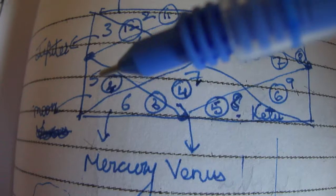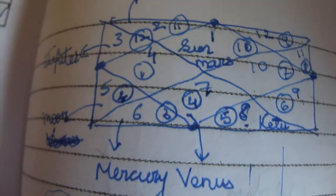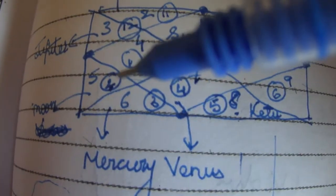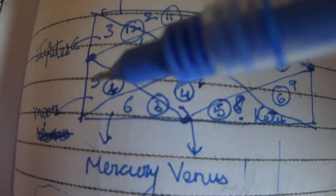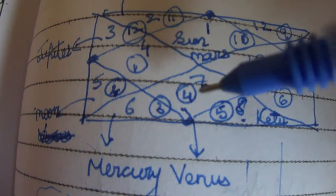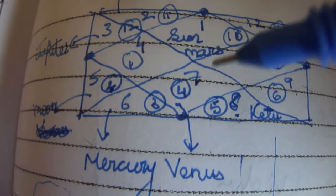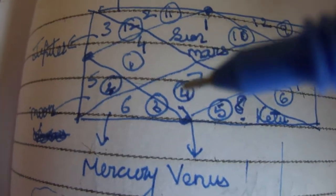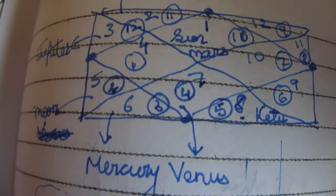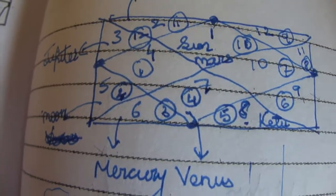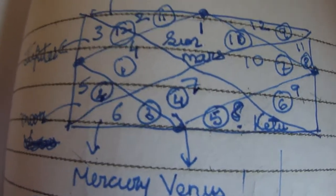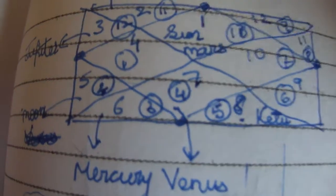The fifth house sign lord—fifth house has sign number two which is Taurus, and Taurus ruler Venus has gone into the seventh house. Now the seventh house has sign number four which is Cancer, and the ruler of Cancer is Moon which has gone to the fifth house. So there's a swap and this is considered very good in terms of marriage.